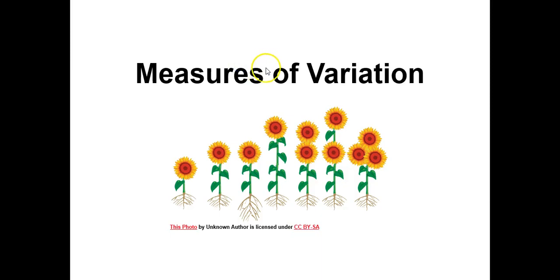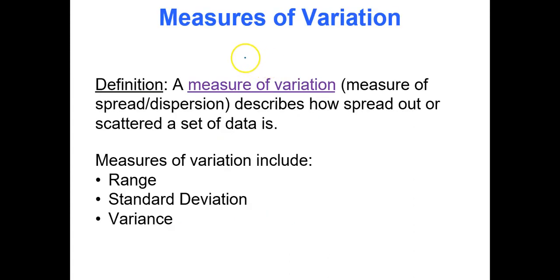Hello, in this video we will discuss measures of variation. A measure of variation, or measure of spread or dispersion as it may be known by other textbooks, describes how spread out or scattered a set of data is.